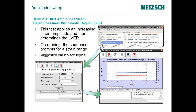You'll end up with results that hopefully show the material behavior not changing with strain until it starts to roll off. What's nice about setting up this test is you really can't make a mistake — you can go to very low starting points and very high ending strains. If for some reason the material breaks structure sooner, it'll just stop.